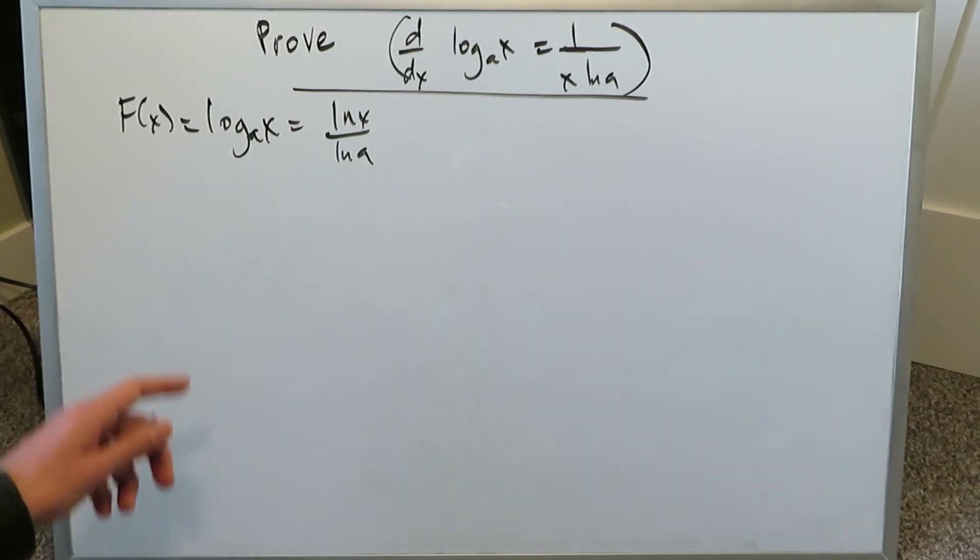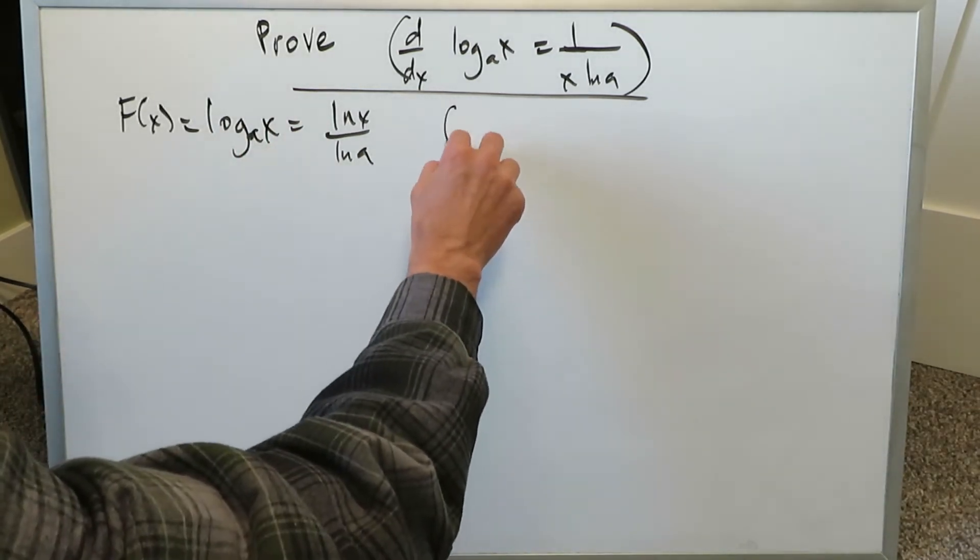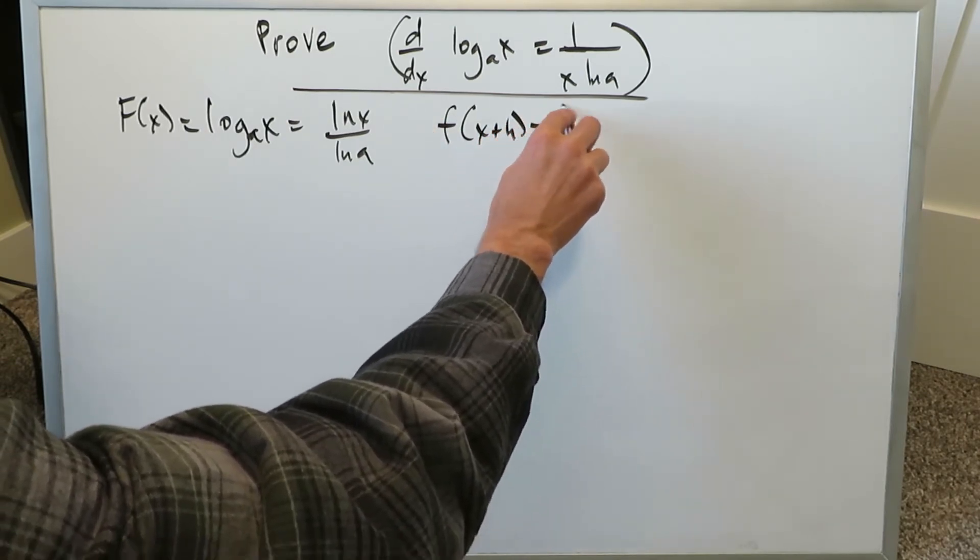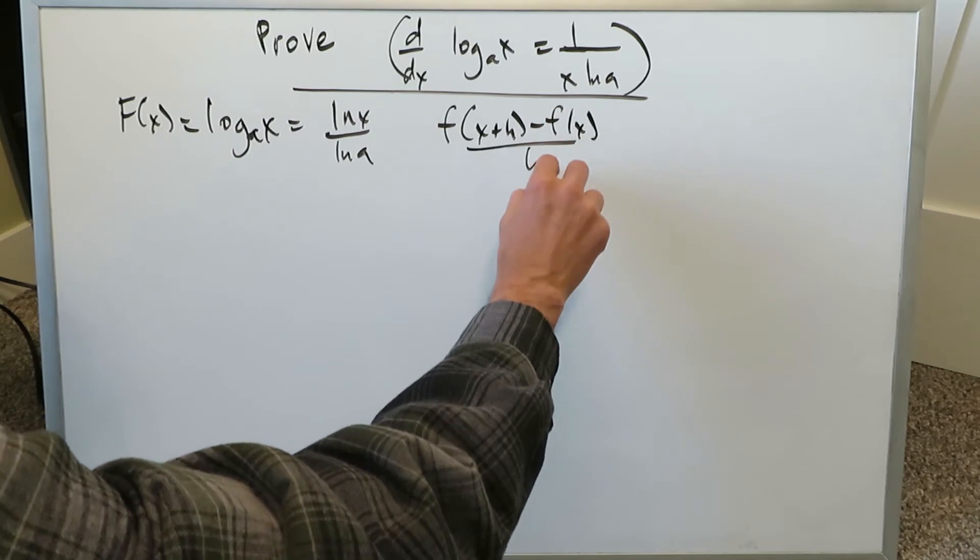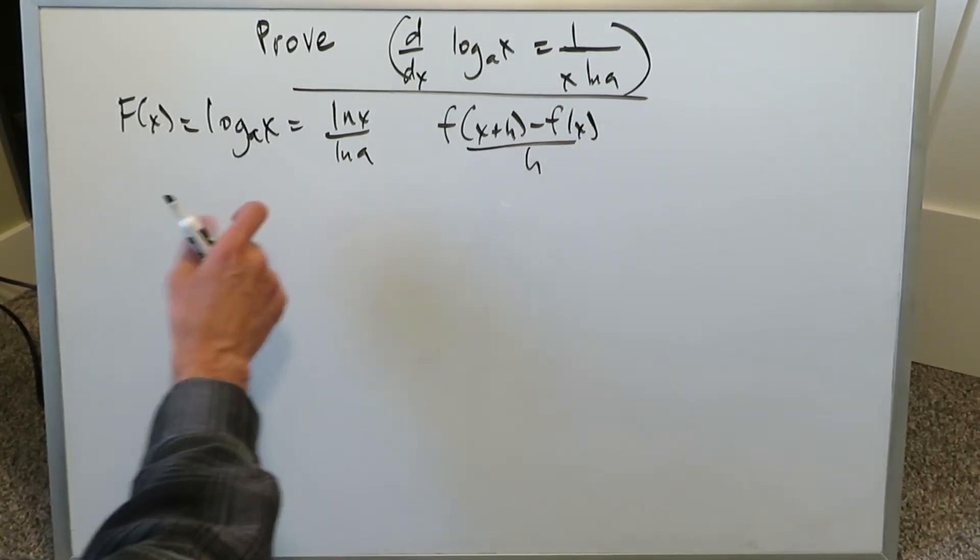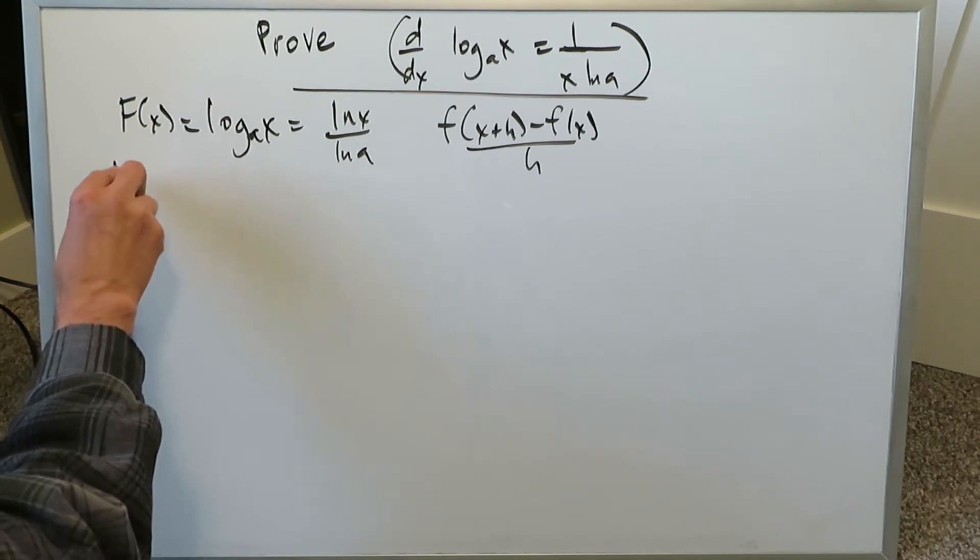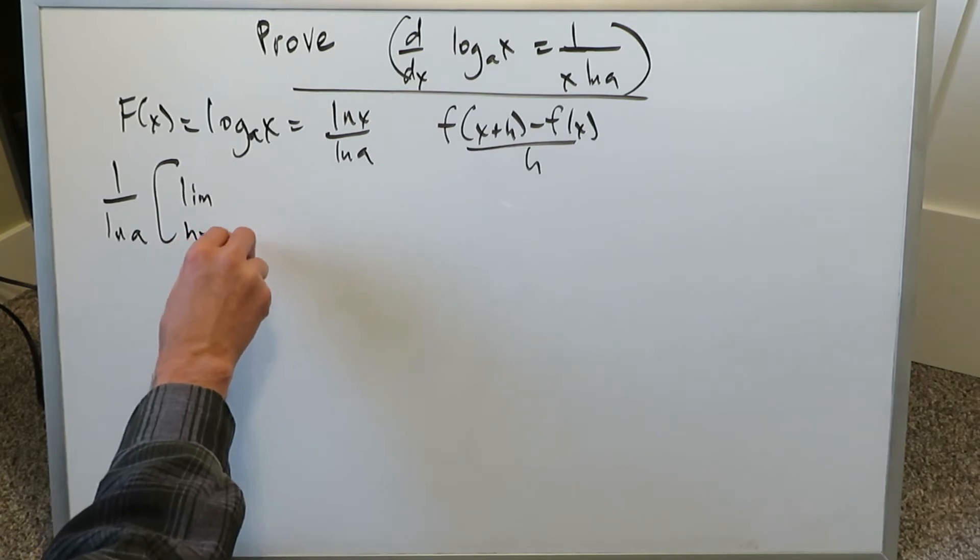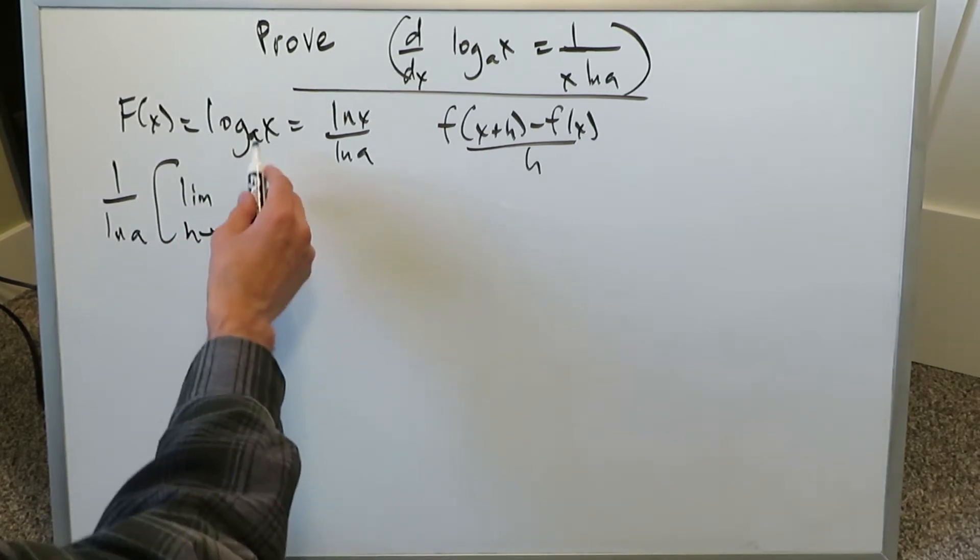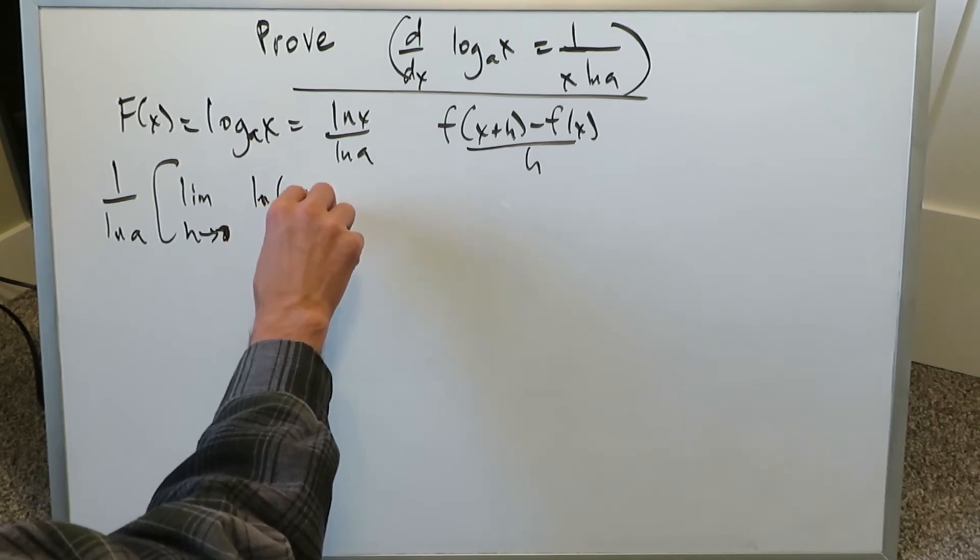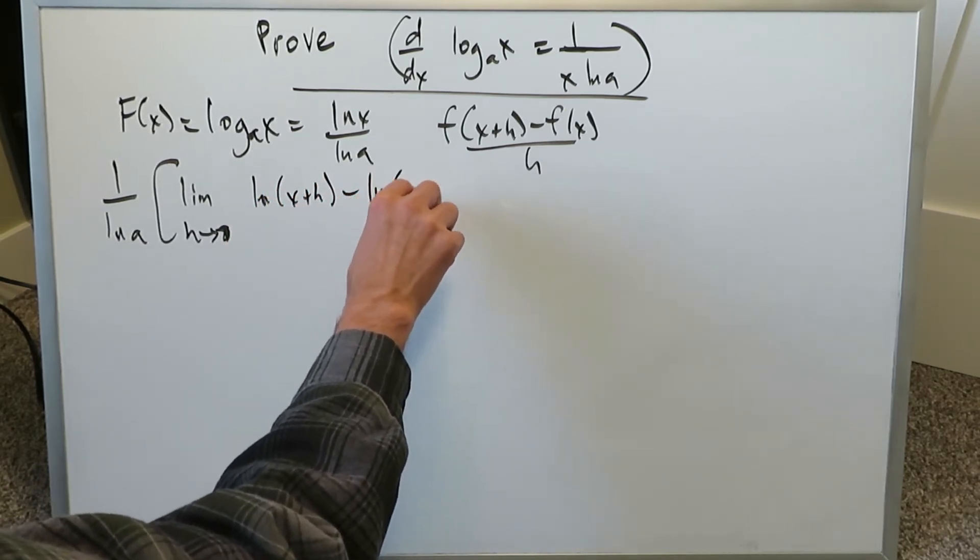If this right here is my function, we're using the basic definition of derivative limit as h approaches 0, f of x plus h minus f of x all over h. You utilize and put everything over here in that template. This right here is a coefficient which you put outside of your entire derivation scheme. Then you do your limit as h approaches 0. Then you start filling up this template with what you have ln x. ln x plus h minus ln x.